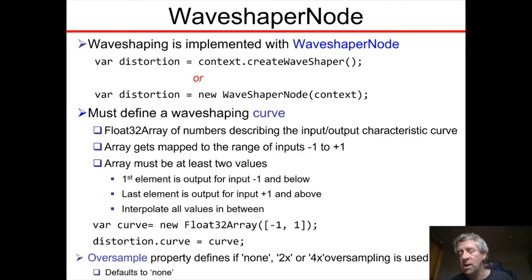That's a way to deal with aliasing produced by wave shaping. Essentially, a signal is upsampled to a higher sampling rate, wave shaping is performed, it introduces aliasing but the aliasing is less problematic at the higher sampling rate, and then one downsamples. It defaults to none. So the assumption is that aliasing is not a problem, but it's not much overhead to use 2x or 4x oversampling.